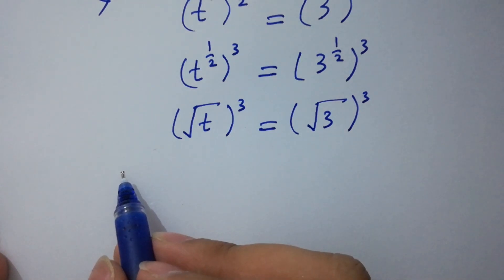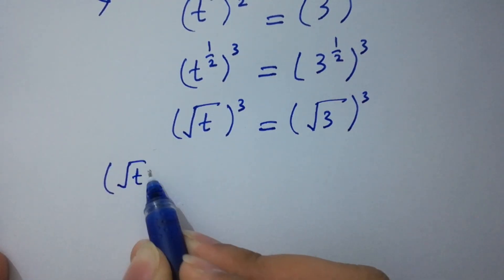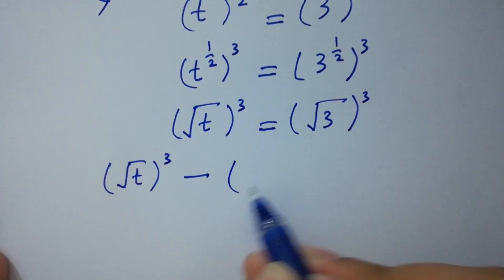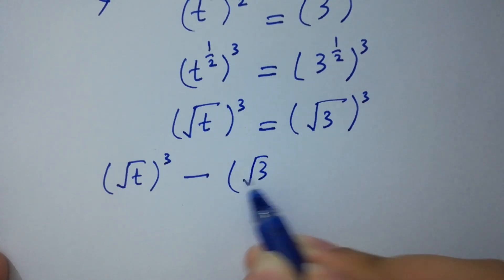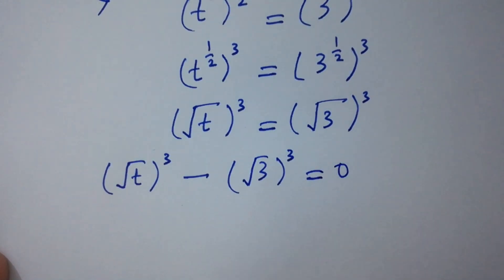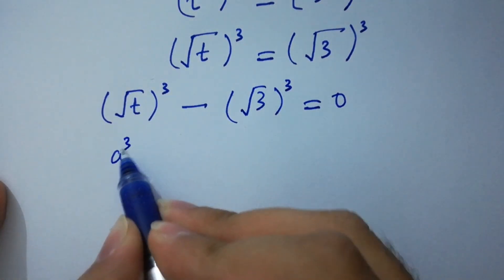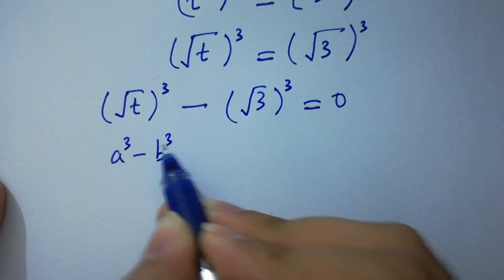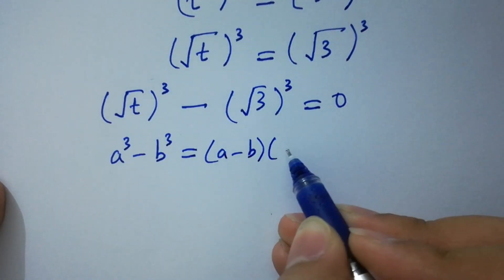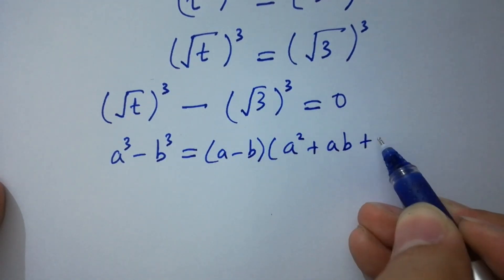Then we have square root of t to the whole power 3 minus square root of 3 to the whole power 3, equal to 0. We know the formula a cubed minus b cubed equals a minus b, times a squared plus ab plus b squared.